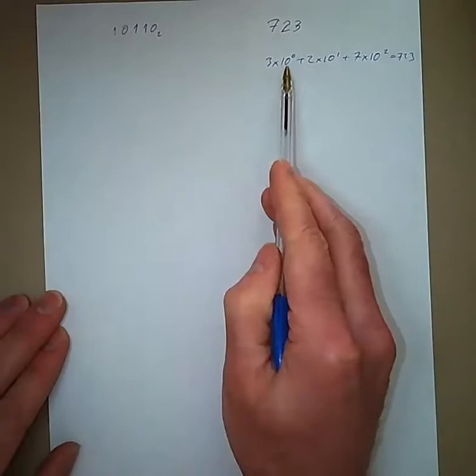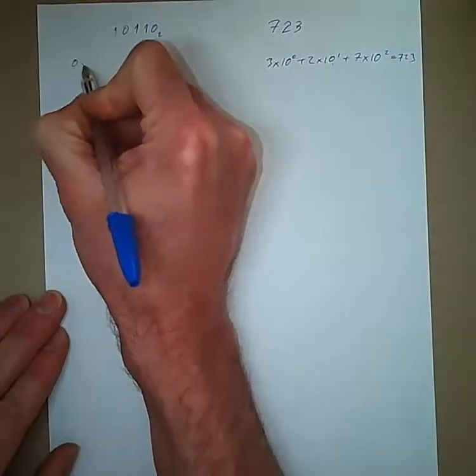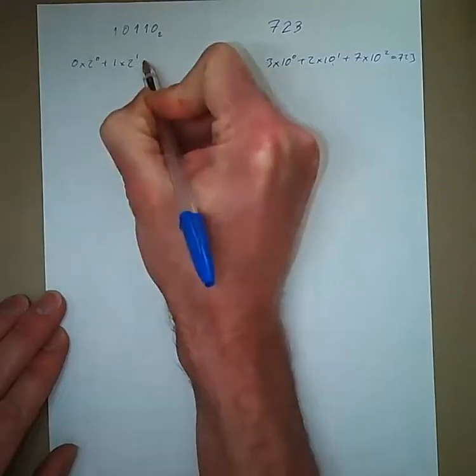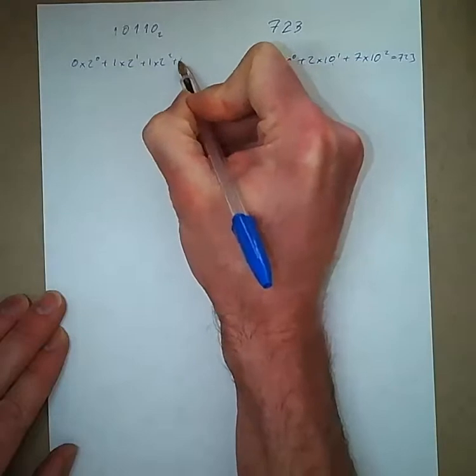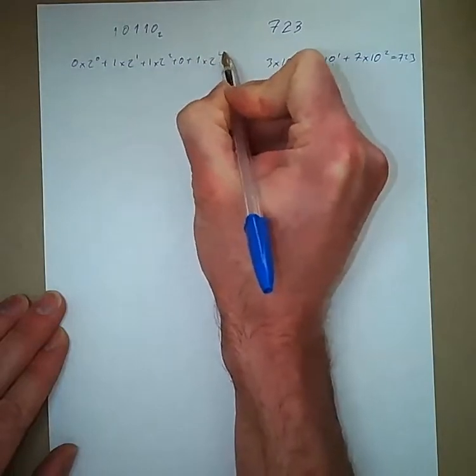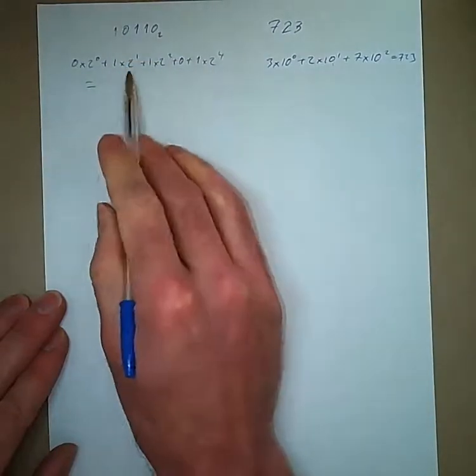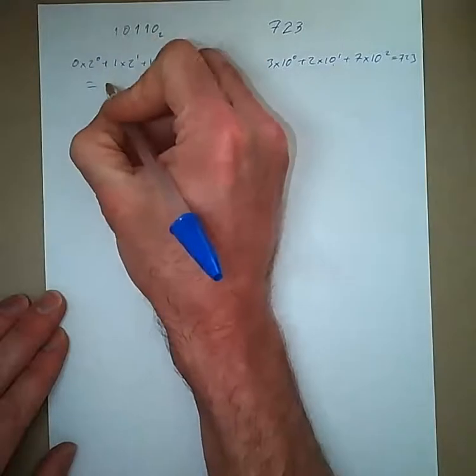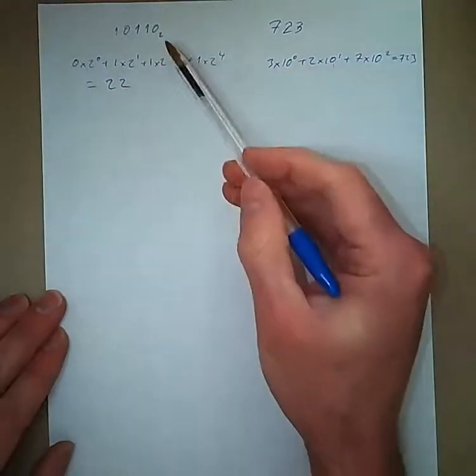The way that we looked at this, the 1's, the 10's, the 100's, we can do the same thing with binary. We have 0 times 2 to the 0 plus 1 times 2 to the 1 plus 1 times 2 to the 2 plus 0 plus 1 times 2 to the 4. So we got 0, 1, 2, 3, 4. And that's equal to 2 plus 4 plus 16, so 22. That's how you convert from binary to decimal.